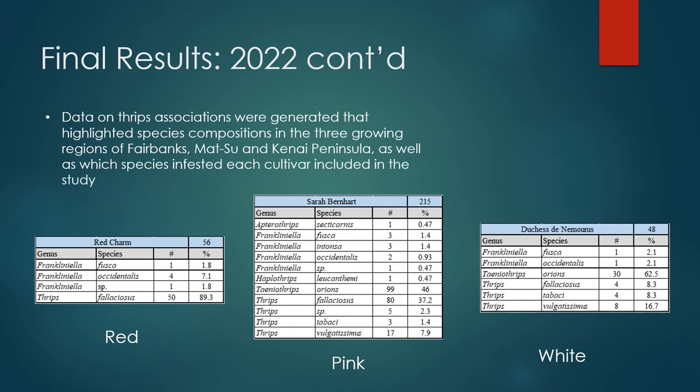Here we can see a comparison of three different cultivars, each of a different color. In general, most thrips species were found on many different cultivars, and some genera, like Taeniothrips, were more commonly encountered than, say, Frankliniella overall. These associations are interesting, but it is difficult to make any strong connections given differences in growing regions and an uneven sampling of cultivars.